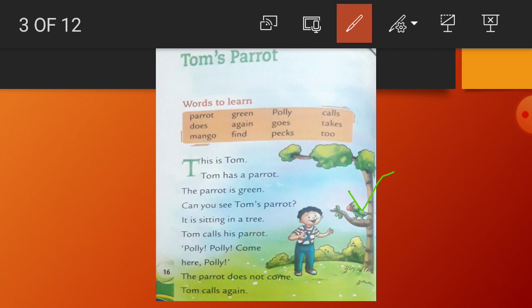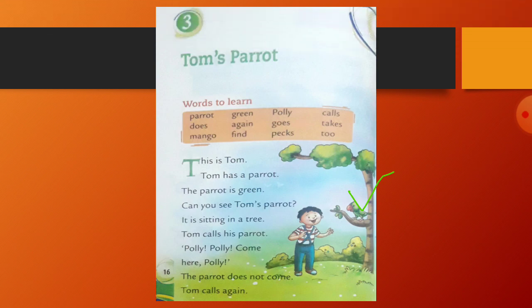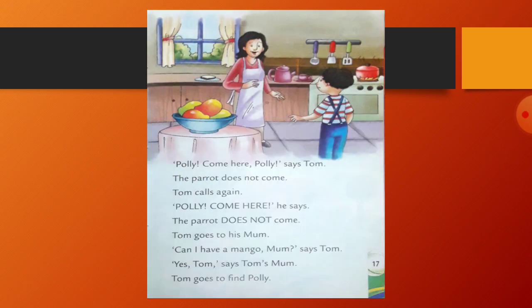The parrot does not come. Tom calls again. Tom has a parrot. Its name is Polly. Tom is calling his parrot again and again, but Polly does not come. Next page.